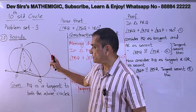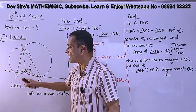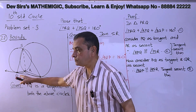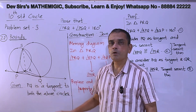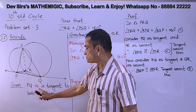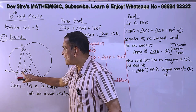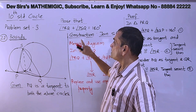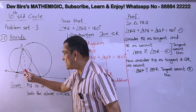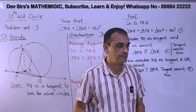This is the diagram given. Two circles intersect each other at points S and R. PQ is the common tangent to both at points P and Q — both are the points of contact. Prove that angle PRQ plus angle PSQ equals 180.